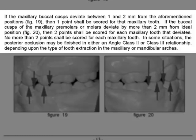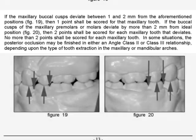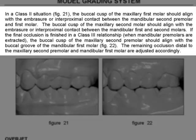In some situations, the posterior occlusion may be finished in either an Angle Class II or Class III relationship, depending on the type of tooth extraction in the maxillary or mandibular arches. In a Class II situation, the buccal cusps of the maxillary first molar should align with the embrasure between the mandibular second premolar and first molar. In a Class III relationship, when mandibular premolars are extracted, the buccal cusps of the maxillary second premolar should align with the buccal groove of the mandibular first molar, with the remaining occlusion adjusted accordingly.